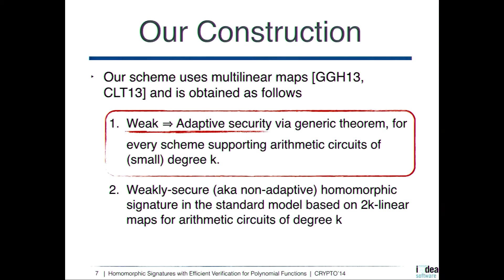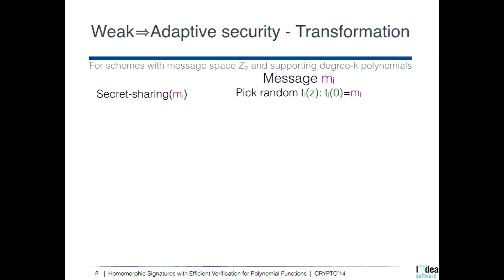One motivation for having such a transformation is that known transformations for going from weak to adaptive security for regular signature schemes do not work for homomorphic signatures. For example, if you use chameleon hash functions, this may completely destroy the homomorphic property of the scheme.